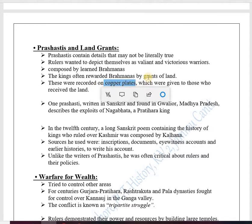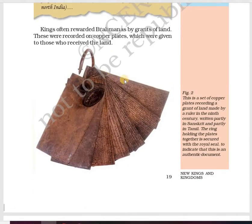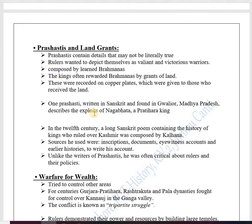These land grants were recorded on copper plates, which were given to those who received the land. The copper plate served as proof for generations that this land was gifted by the king to the Brahmanas. Copper cannot decompose, so it was preserved as evidence. One Prashasti written in Sanskrit, found in Gwalior, Madhya Pradesh, describes the exploits of Nagabhata, a Pratihara king.